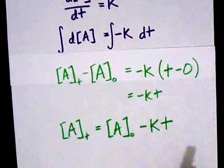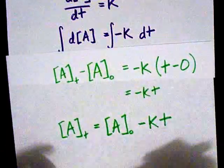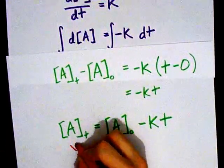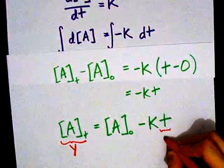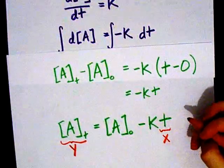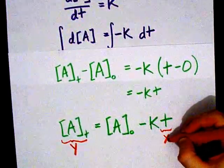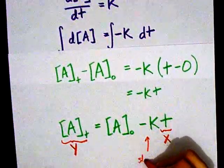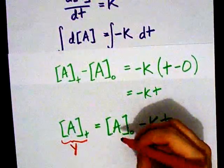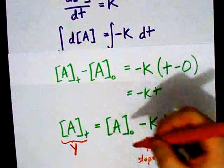The last thing I want to point out is that this is a line. If you graph this on your y, and you make time your x, you'll get a straight line with a slope of negative k, and a y-intercept at your initial concentration.